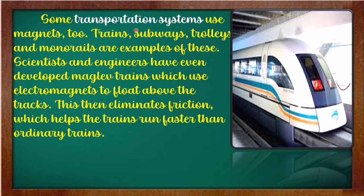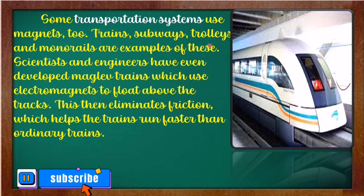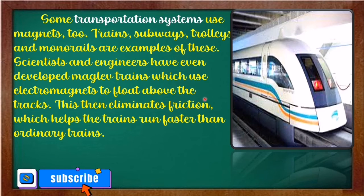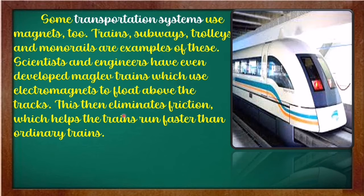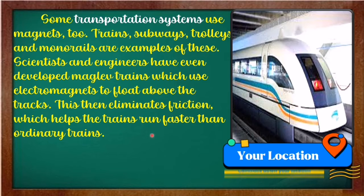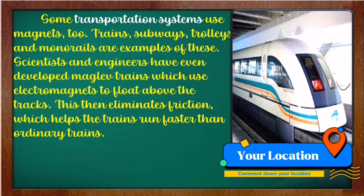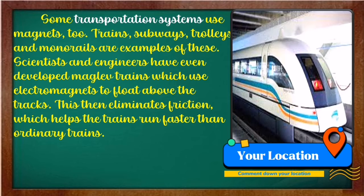Some transportation systems use magnets too. Trains, subways, trolleys, and monorails are examples of this. Scientists and engineers have even developed maglev trains, which use electromagnets to float above the tracks. This eliminates friction, which helps the train run faster than ordinary trains. This in the picture is an example of a maglev train used in nations like China or Japan.